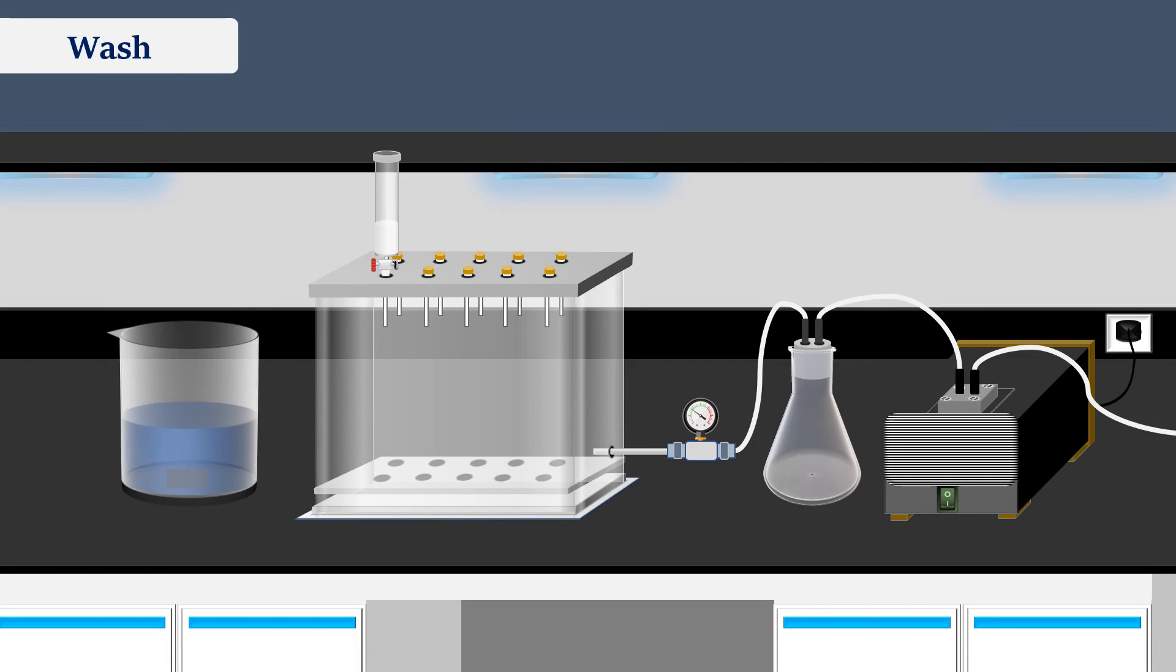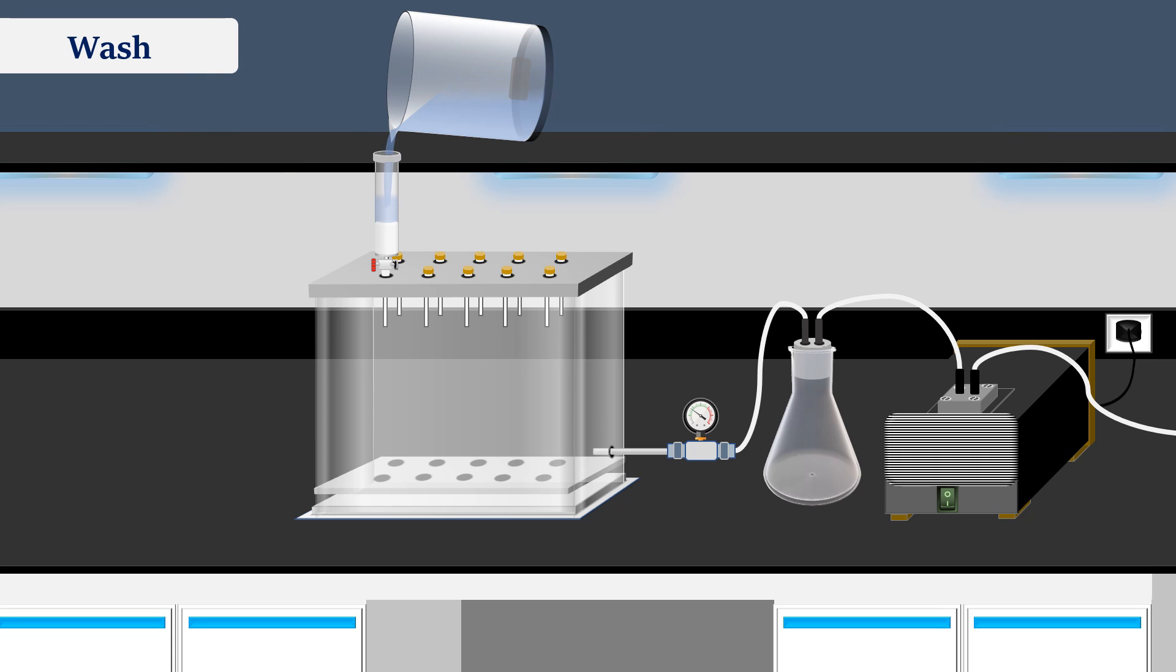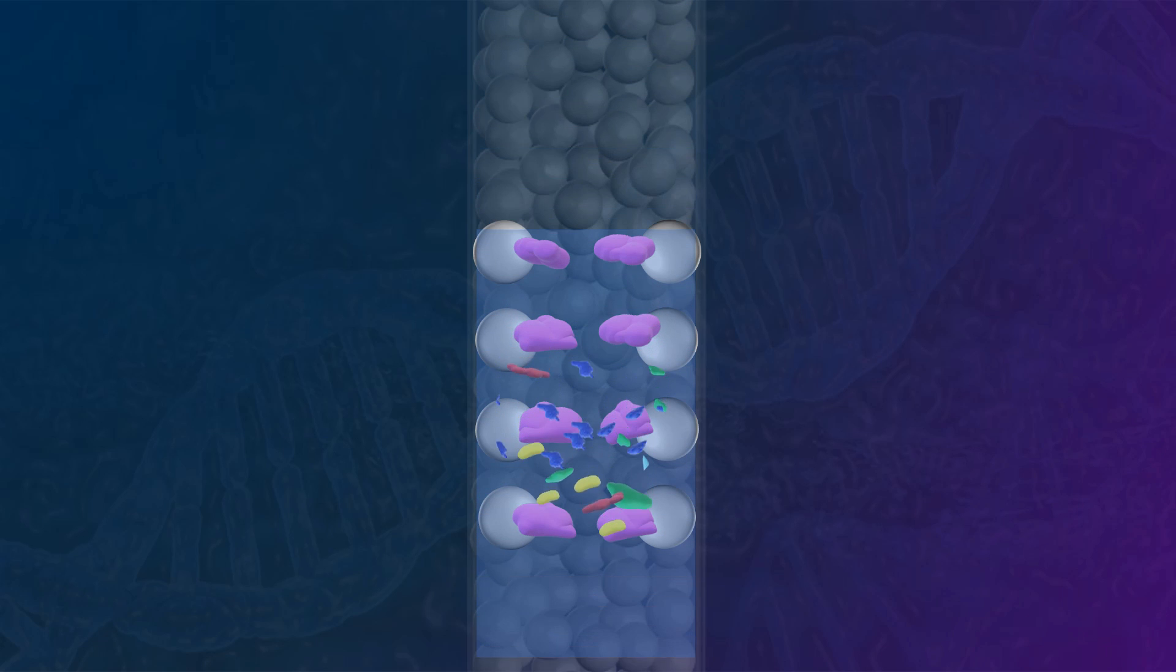Next, a wash step is implemented using a wash buffer. The wash buffer is employed to remove any non-specifically bound or impurity molecules, leaving behind only the specifically bound target protein.